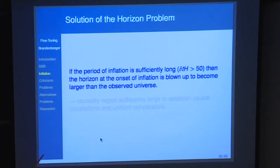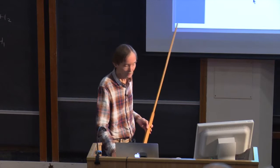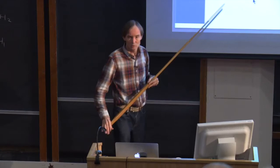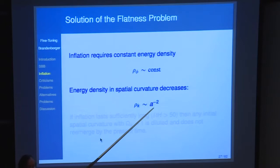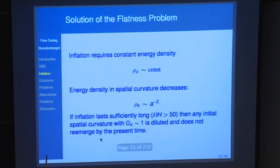If the period of inflation is sufficiently long, then the horizon at the onset of inflation is blown up to be larger than the observed universe, so the causality region is large enough to establish causal contact and uniform temperature. In Einstein's theory of gravity, to get inflation you require matter with constant energy density. Relative to constant energy density, the energy density in spatial curvature decreases very fast. So even if at the beginning of inflation you start with significant spatial curvature, it decreases exponentially and becomes negligible at the end of inflation.